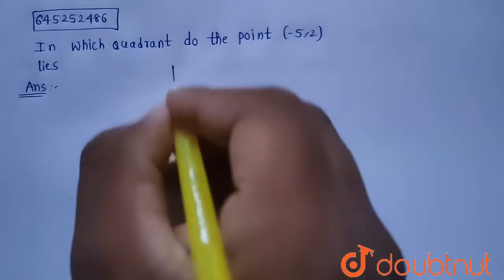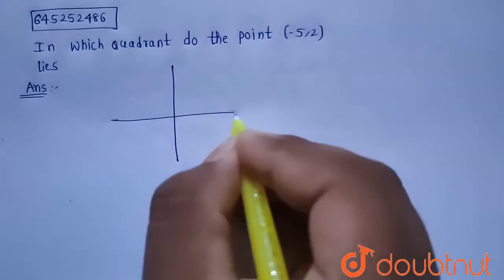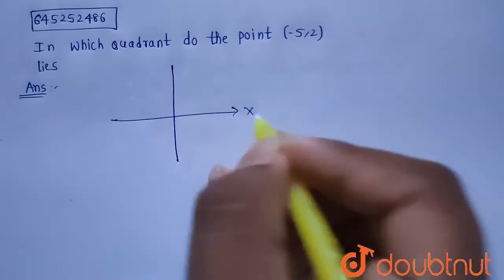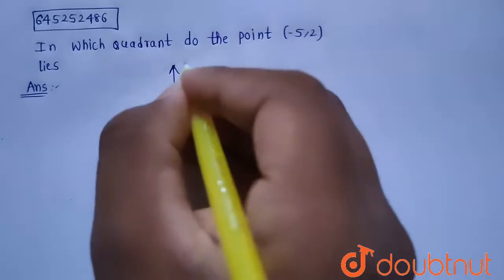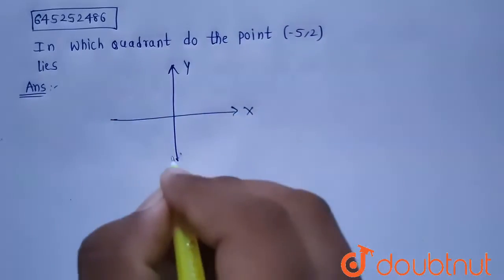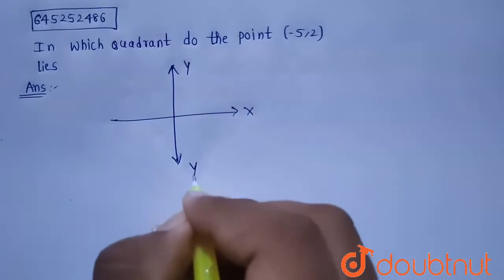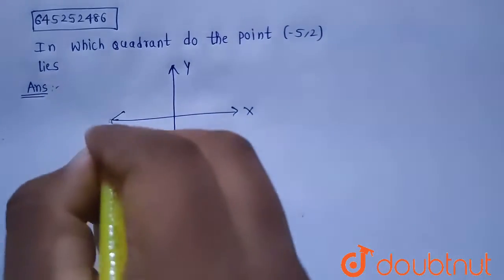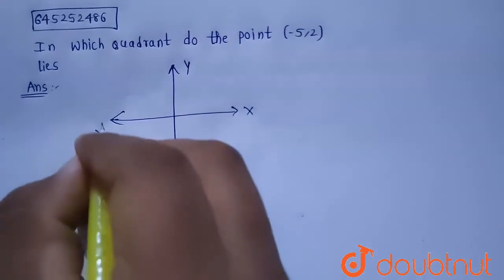So now let me draw the coordinate system here. This is the positive x-axis, this is the positive y-axis, this is the negative y-axis, and this is the negative x-axis.